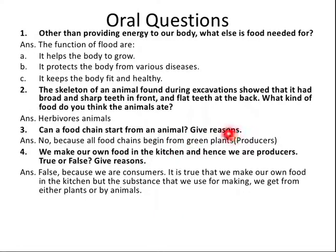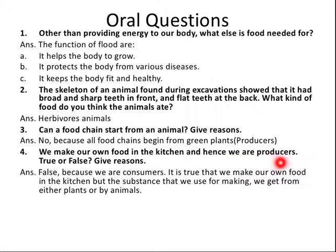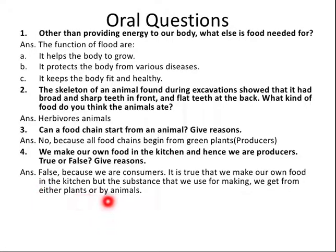Next question: can a food chain start from an animal? No, a food chain cannot start from an animal because all food chains begin from green plants, which are known as producers and make their own food. Next question: we make our own food in the kitchen and hence we are producers — true or false? This is false. We are consumers. It is true that we make food in the kitchen, but the substances we use come from plants or animals.